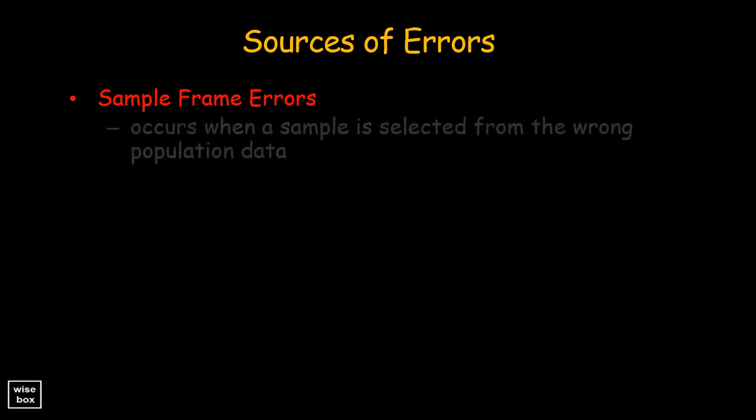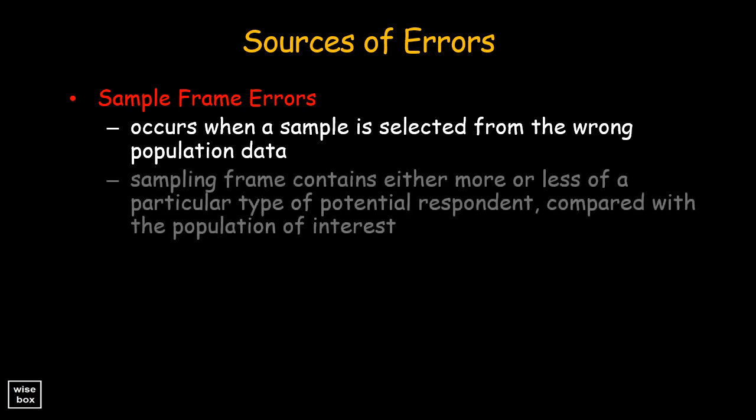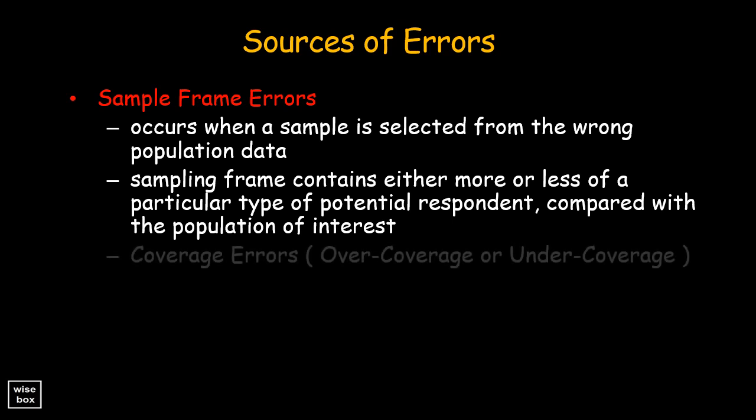It occurs when a sample is selected from the wrong population data. It occurs when the sampling frame contains either more or less of a particular type of potential respondent compared with the population of interest, which is referred to as coverage errors, over coverage or under coverage.